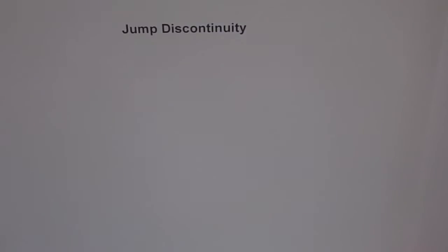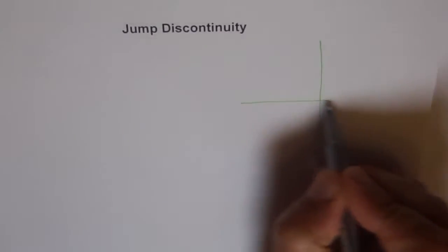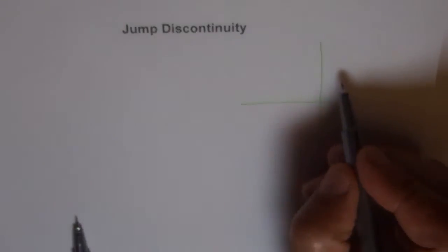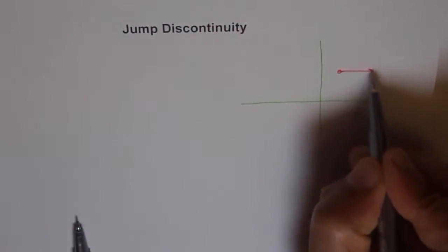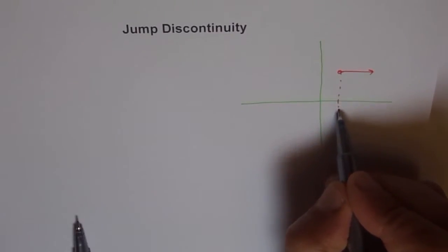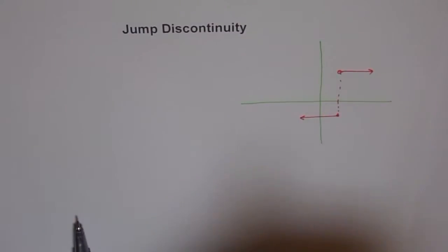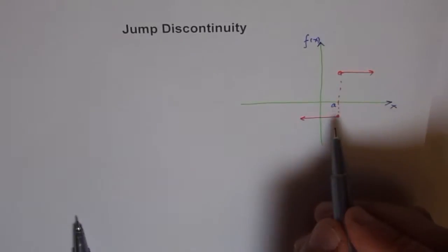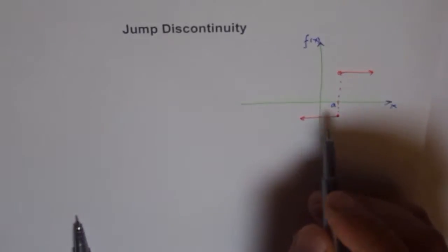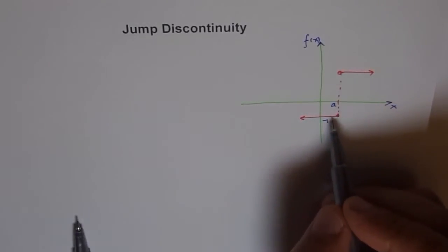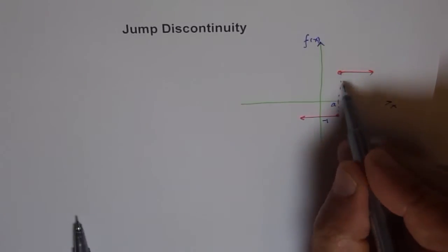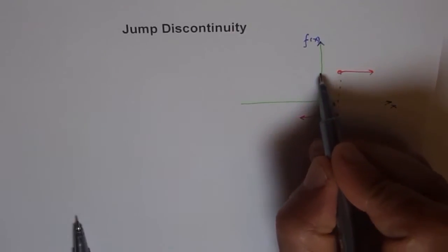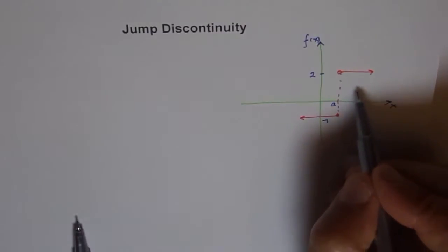Let's discuss jump discontinuity. We'll draw a function to see it — I think from the diagram itself it will be very clear. Let's say we have a function defined like this, and at point a, if you approach from negative infinity it gets to a value — let's say minus 1 — but at point a it is discontinuous. You see that discontinuity? It all of a sudden jumps to another point, let's say plus 2.